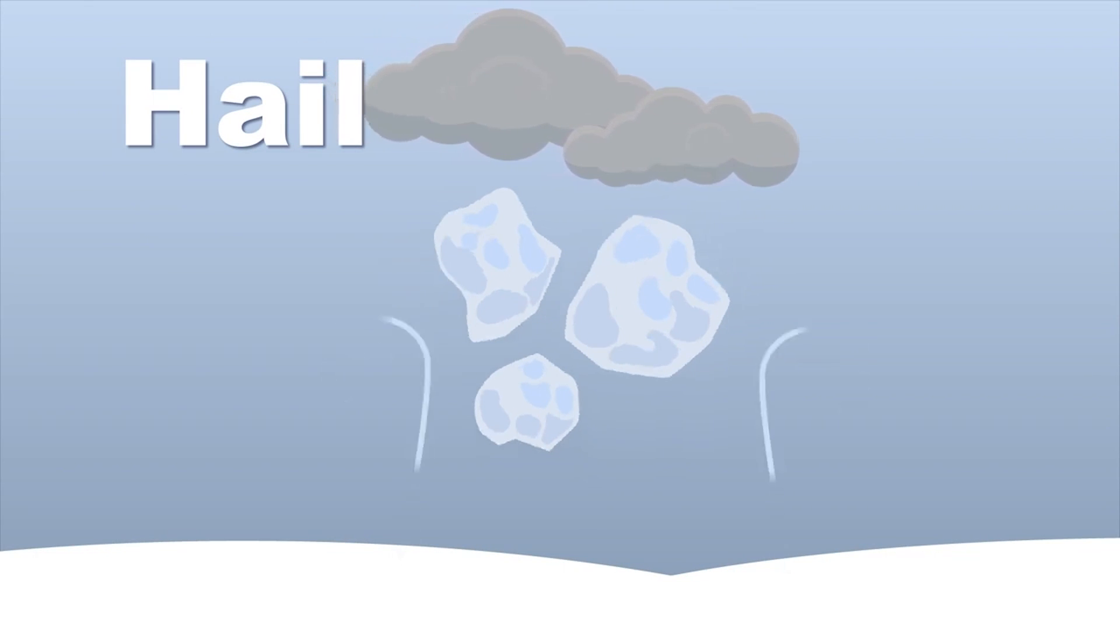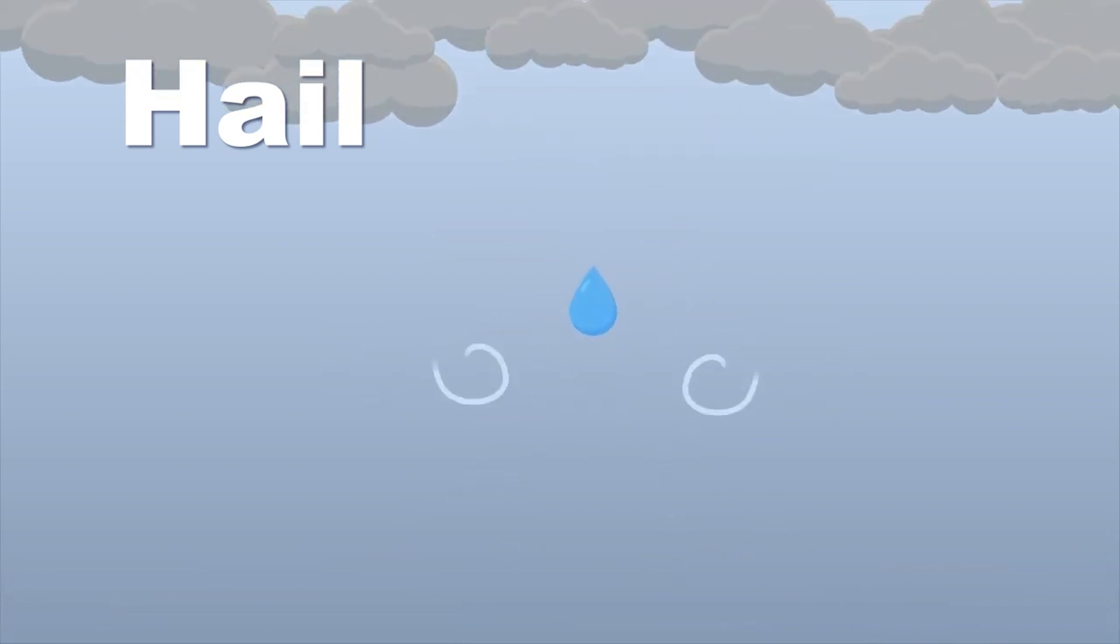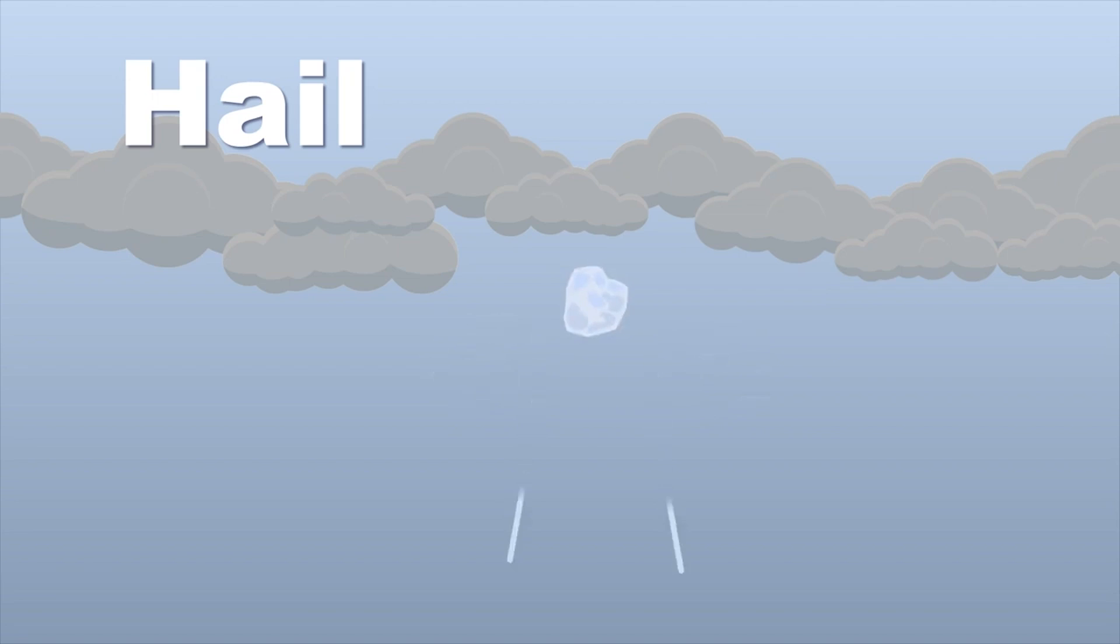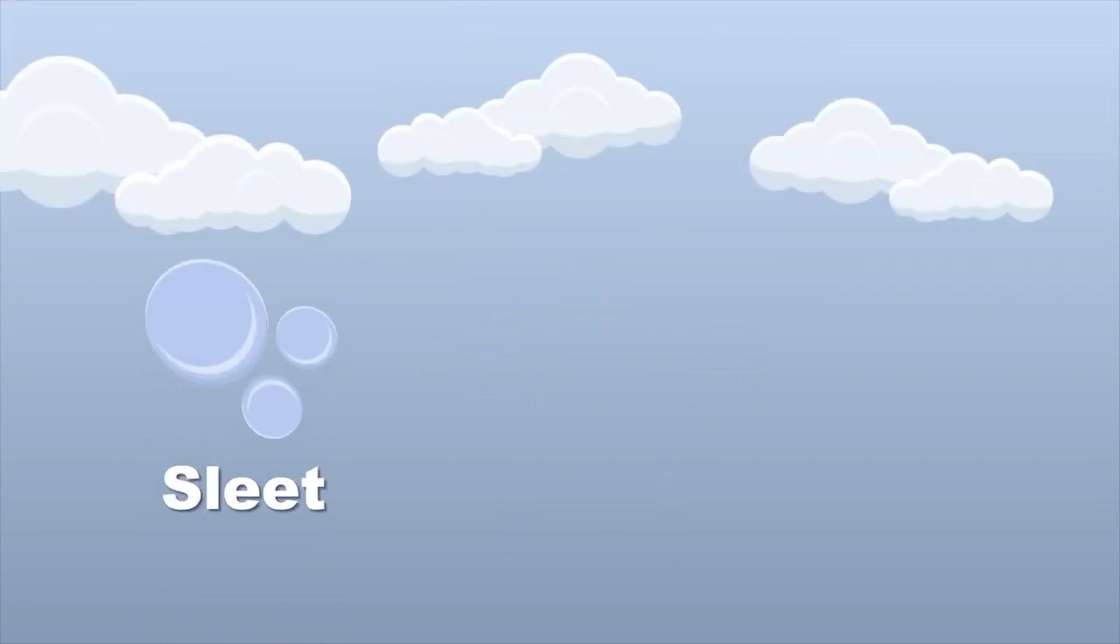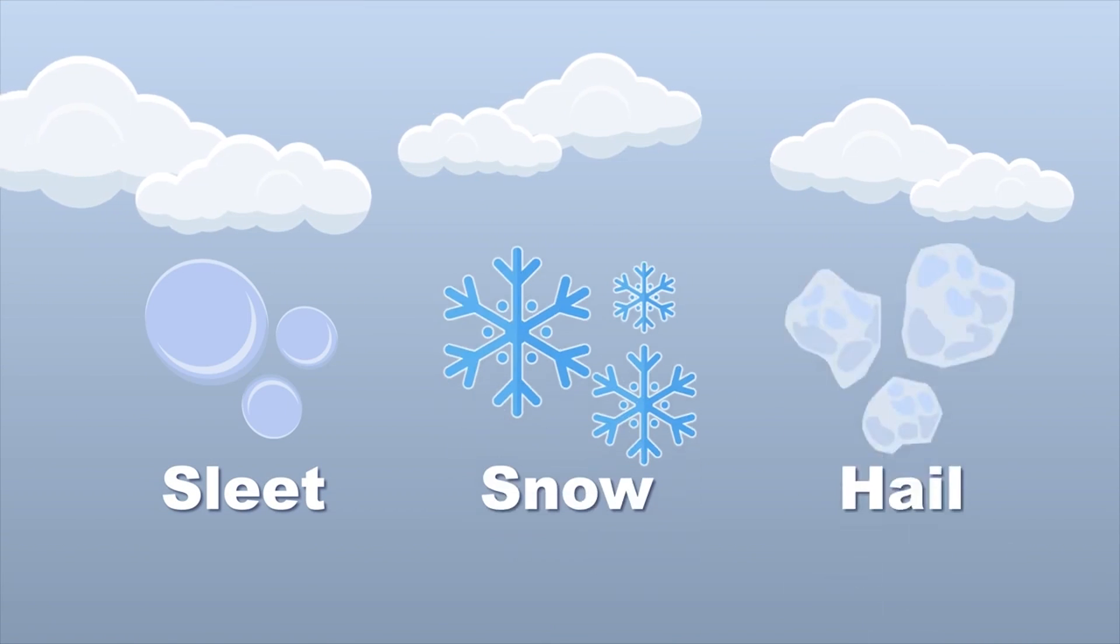Hail are balls of ice that form within severe thunderstorms with strong updrafts, and this is how they are formed. These updrafts carry raindrops high into the cold upper regions of the storm where they freeze into ice then drop in warmer seasons.